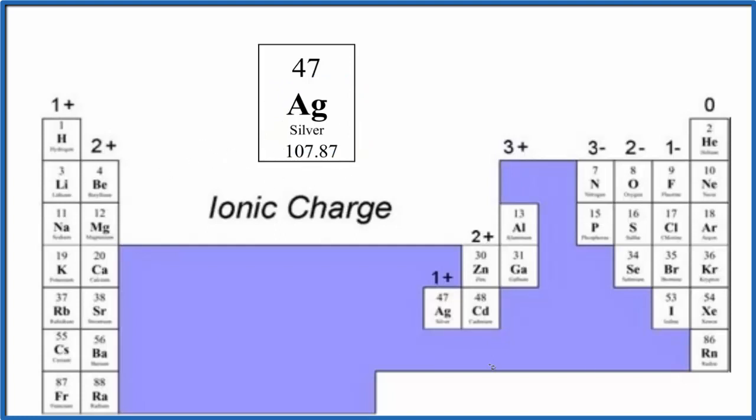So we look at the periodic table here and we have it organized by charge. Elements in group 1 have a 1+ ionic charge. They'll lose one electron when they form ions. Group 2, 2+.